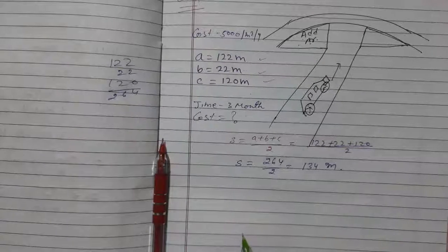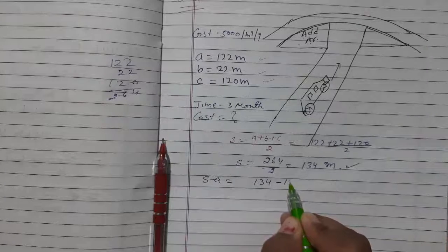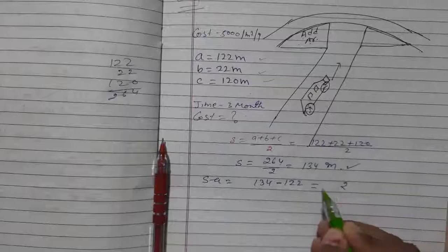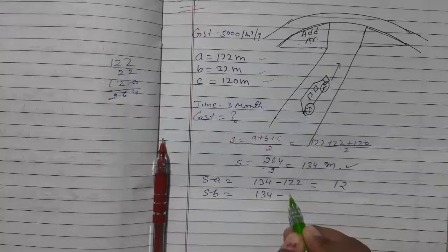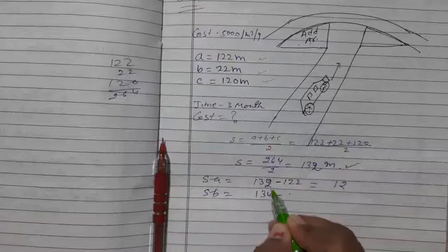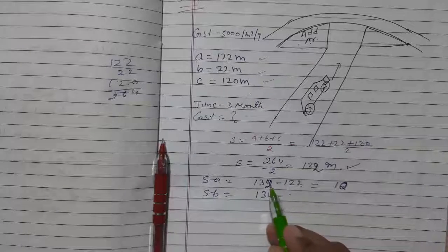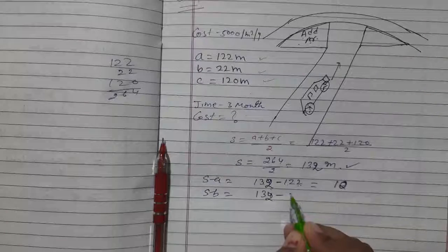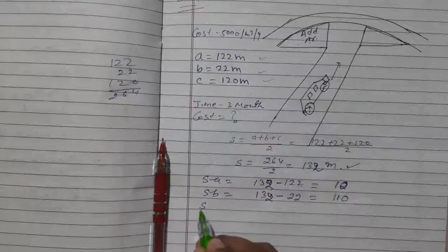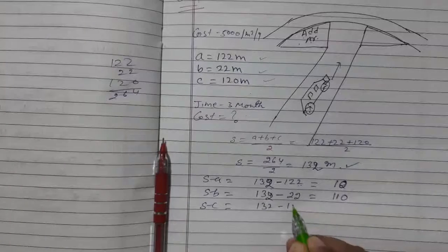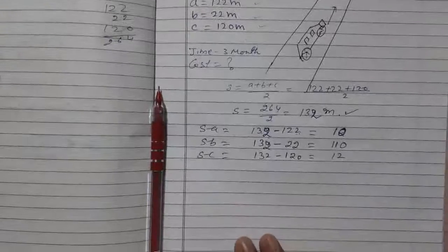Now we have semi-perimeter. So s minus a, we will find out: 132 minus 122, so it will give us 10. S minus b: 132 minus 22 is 110. S minus c: 132 minus 120, so it will give us 12.